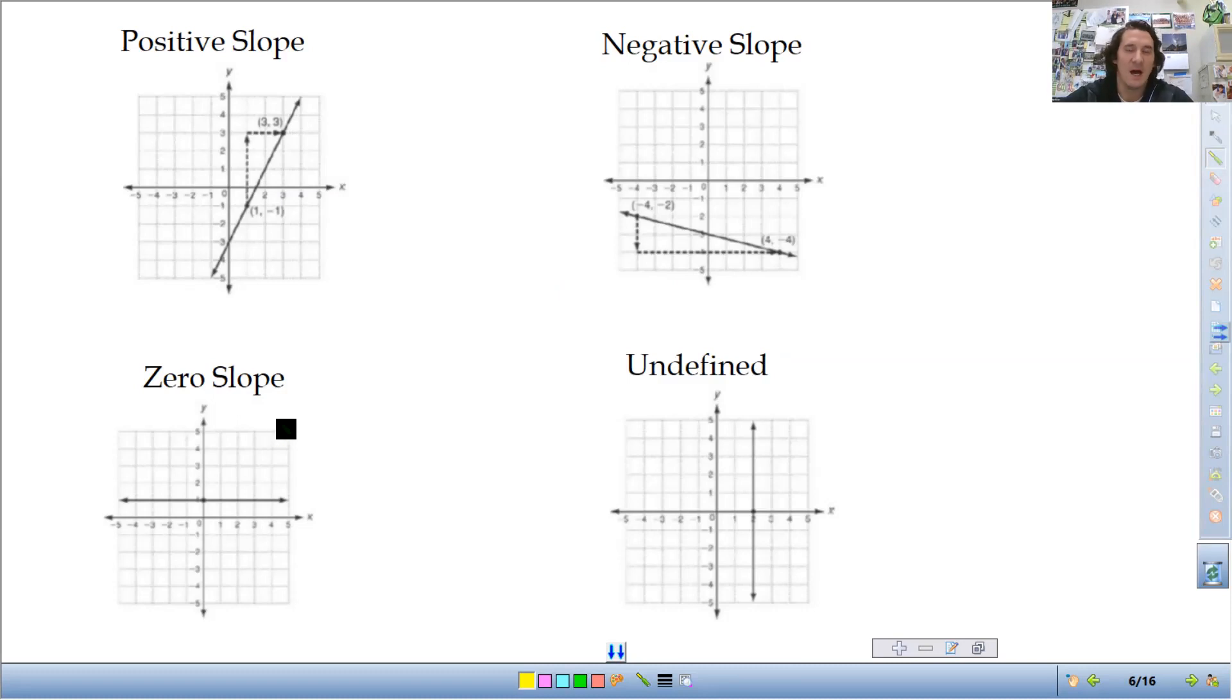And then there's the zero slope. It's so flat that it doesn't have a slope. So it's zero or undefined that it's so steep. We don't have a number big enough to define how steep that is. It's straight up and down. So it's undefined slope. Positive, negative, zero, or undefined. Let's look at a couple of examples from delta math.